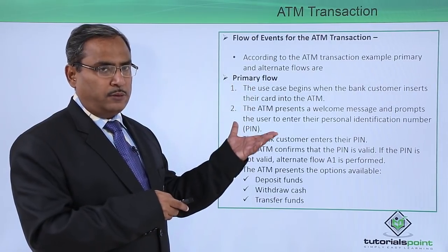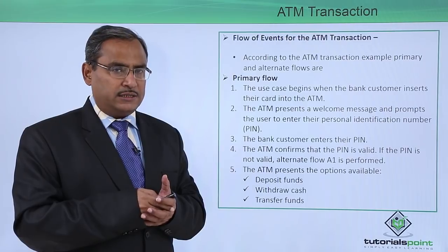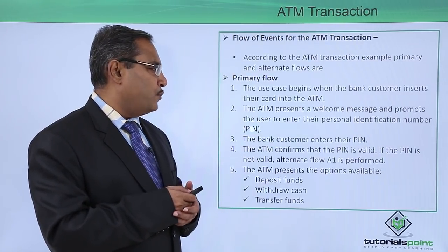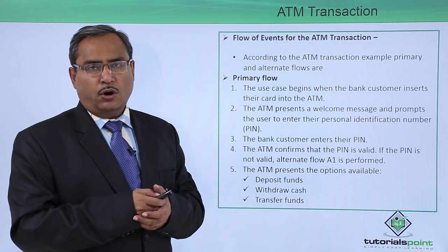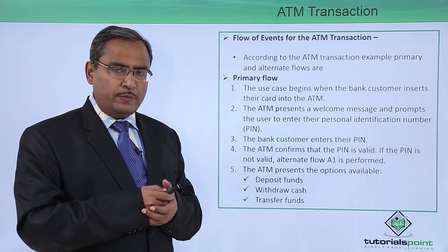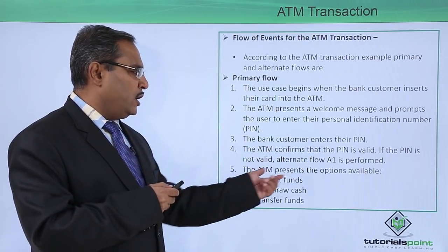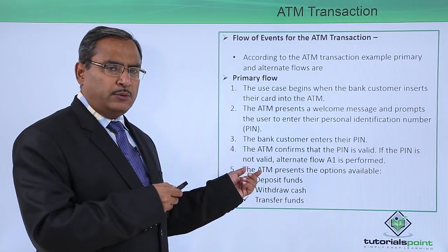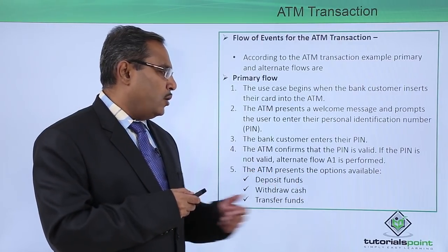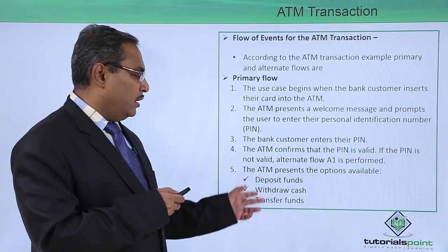The primary flow: the use case begins when the bank customer inserts the card into the ATM. The ATM presents a welcome message and prompts the user to enter their PIN, which consists of 4 numeric digits. The bank customer enters the PIN; the ATM confirms the PIN is valid. If the PIN is not valid, alternate flow A1 is performed. The ATM then presents options: deposit funds, withdraw funds, and transfer funds.